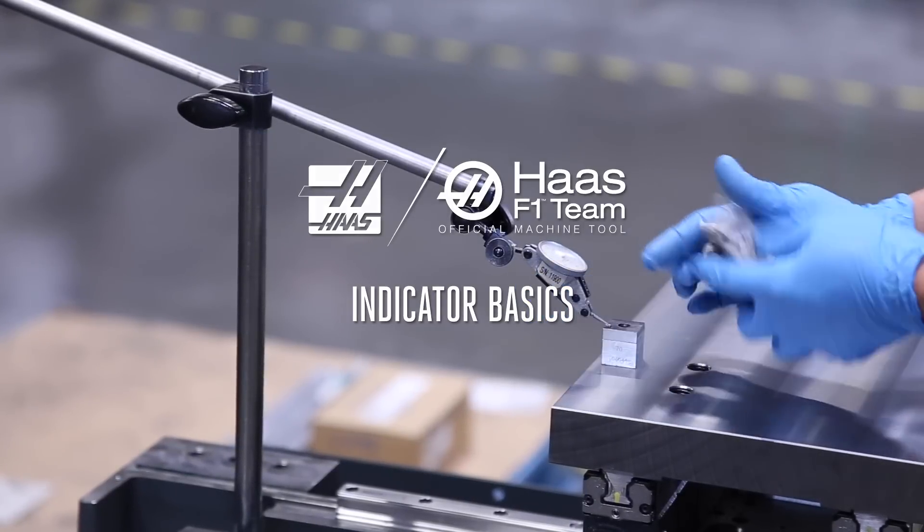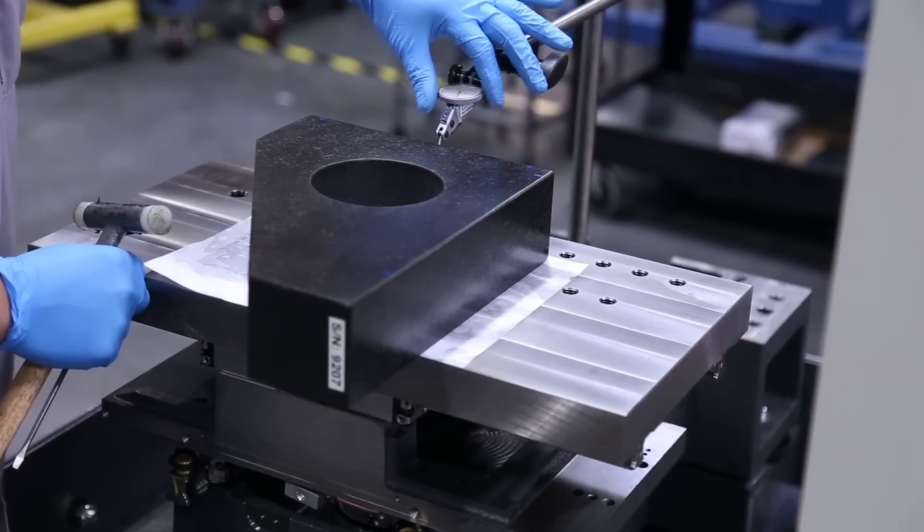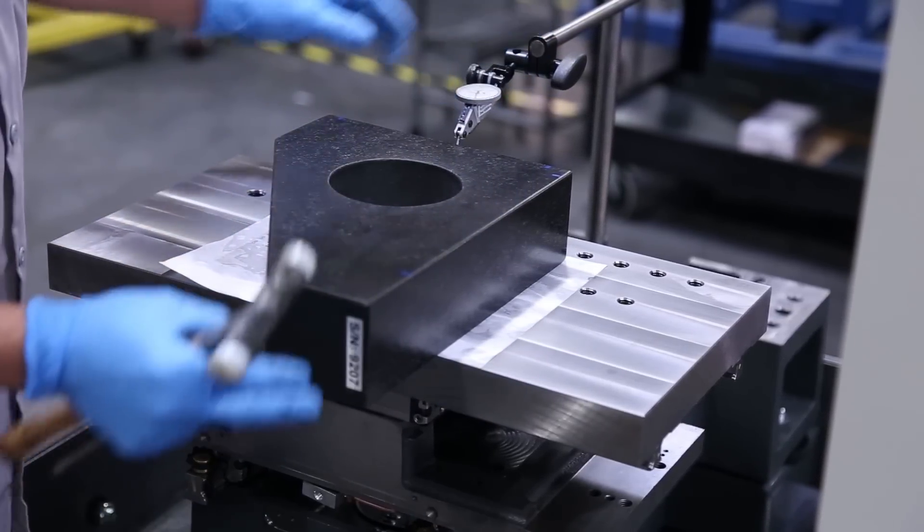An indicator is a basic tool in machining, building machines, and fixing machines. You use it to make extremely fine measurements to ensure that things are made or assembled correctly.